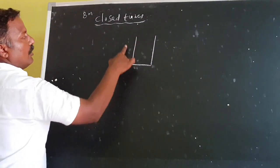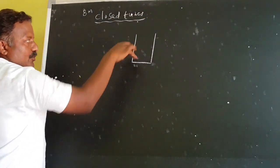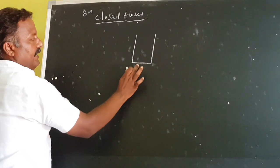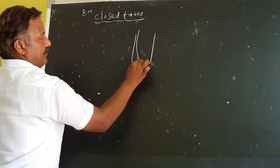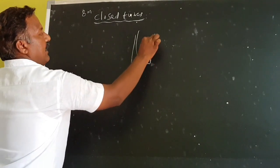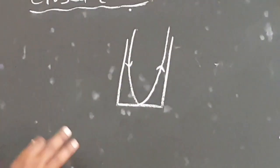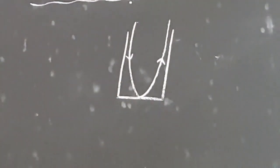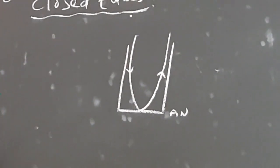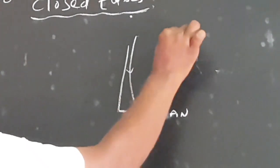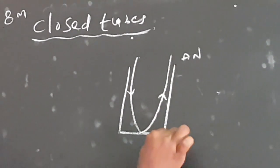This end is closed, it is called closed tube. Suppose the sound wave is sent into the closed tube. The wave is reflected at the closed end. The incident wave and reflected wave both are superposed on each other and can produce a stationary wave. At the closed end, a node is formed. At the open end, an anti-node is formed.